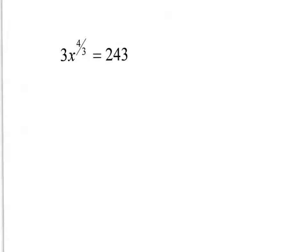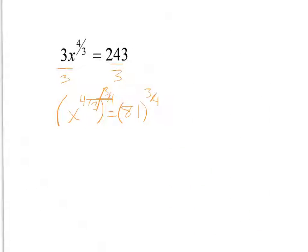Once again, I want to get rid of the 3 in front, so I divide by 3. Then x to the 4/3 equals 81. I raise it to the 3/4 power to get rid of the exponent — those all cancel out. x equals the 4th root of 81, which is 3, and then 3 cubed is 27.